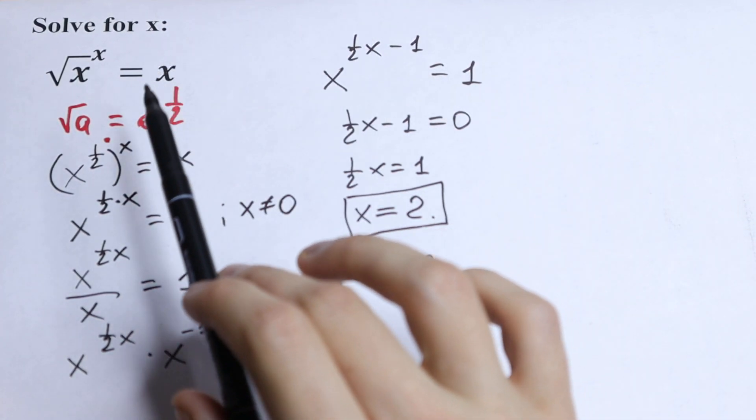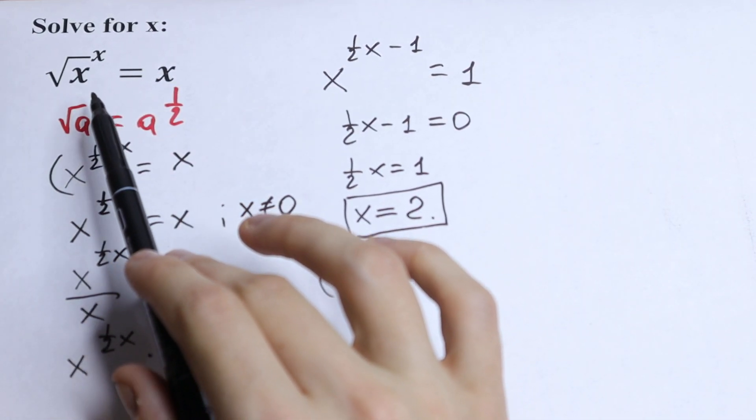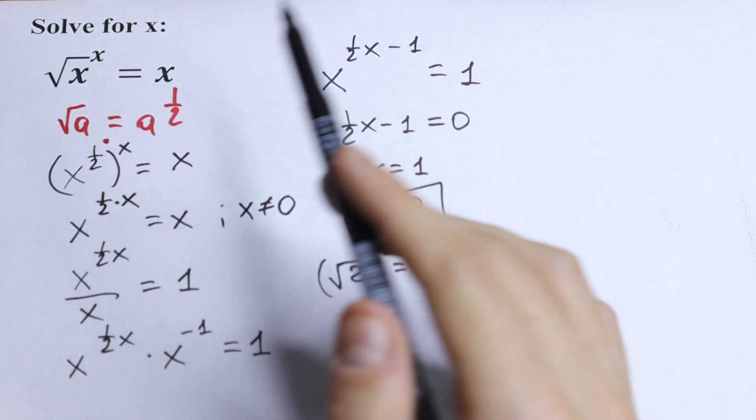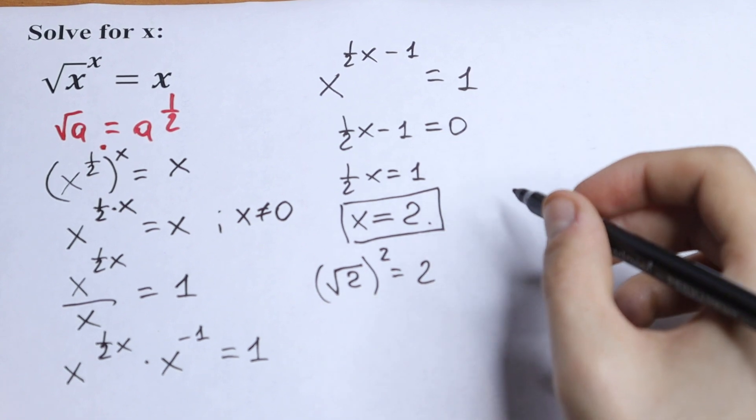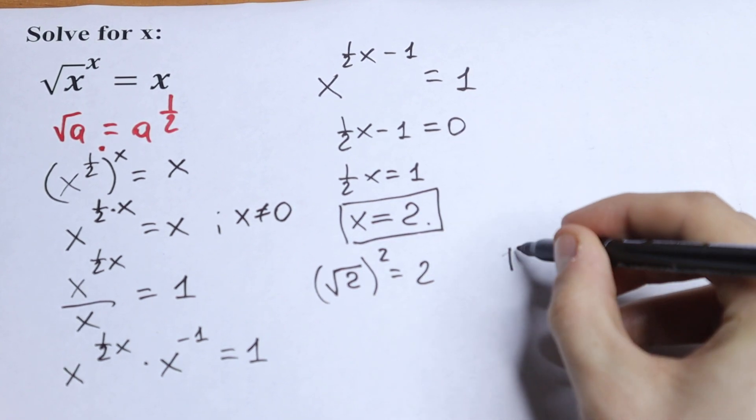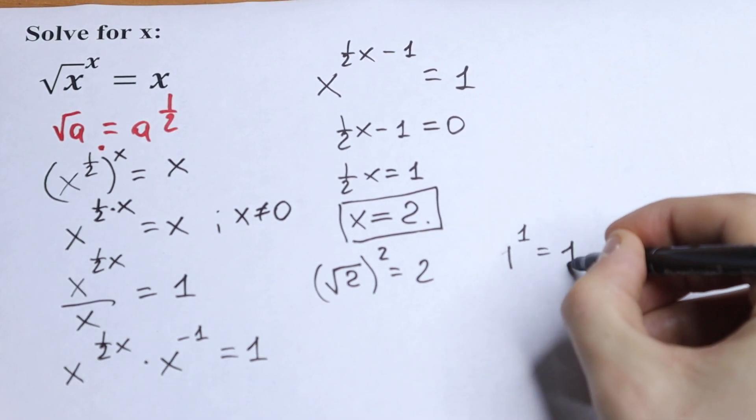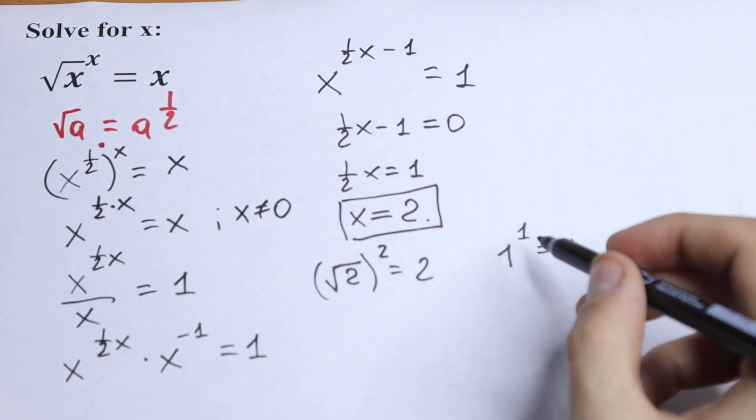But it's not hard to see that √1 will be our root to this equation as well, because if we put 1 right here, we will have 1 to the power 1 equal to 1, which is of course correct.